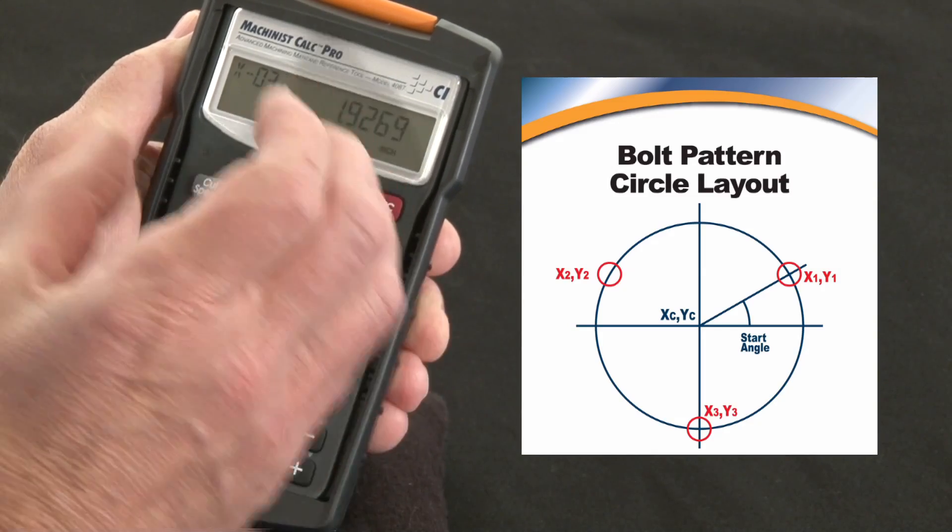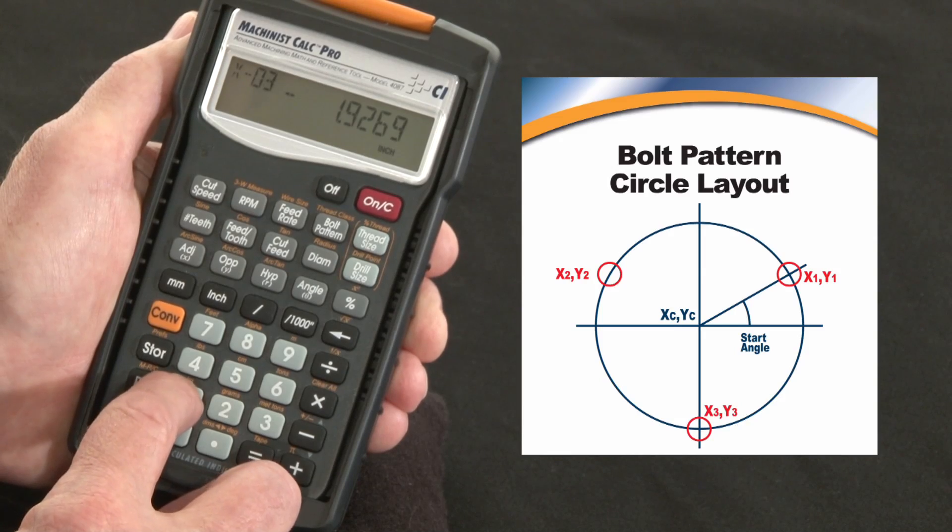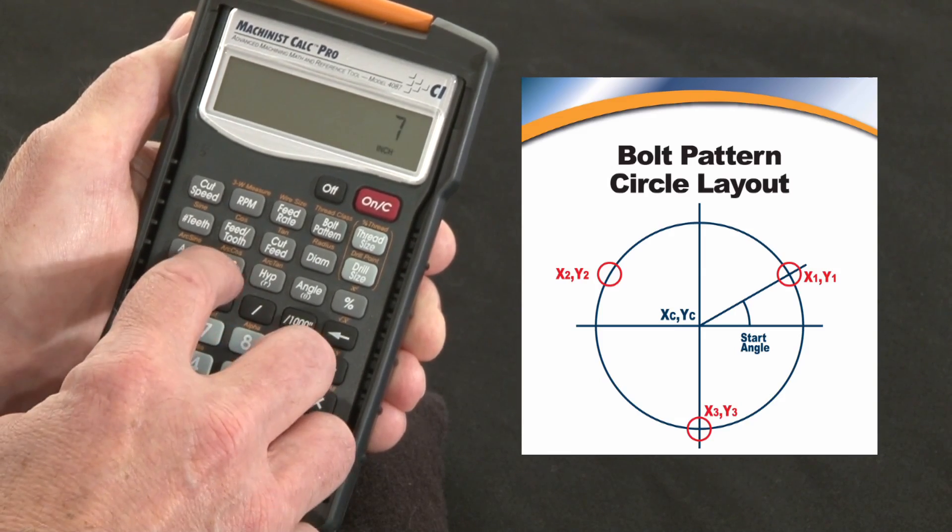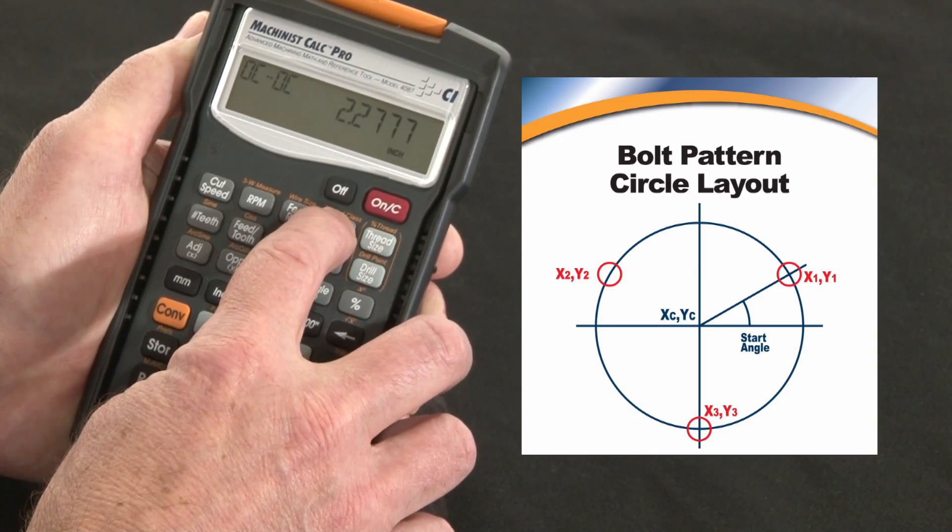One other thing I can do is, what if the origin point was not in the center but way off to the side somewhere? So let's say my X was at 12 inches in and my Y is 7 inches. Come back over here, there's 5 bolts, this chord length is still the same.